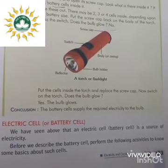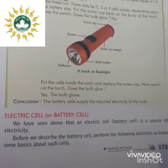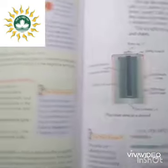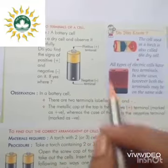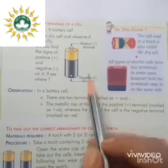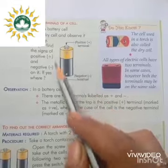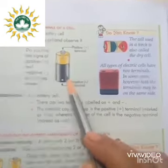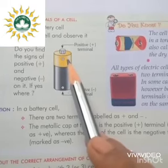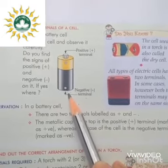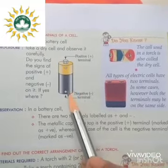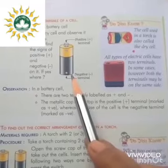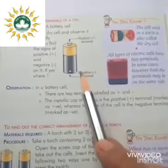Now we will study the battery cell, as it is important for the supply of electricity. The electric cell or battery cell is a source of electricity. This activity shows the basic structure of a battery cell, and we should also know the two terminals of a cell. A dry cell is taken and observed carefully. We will see two signs on the dry cell — one sign is positive and on the other end it is negative.